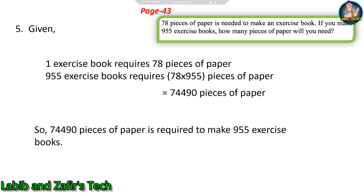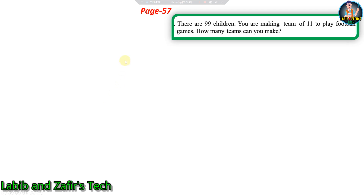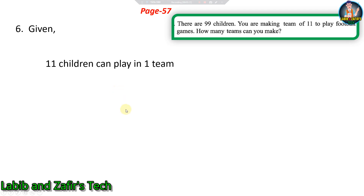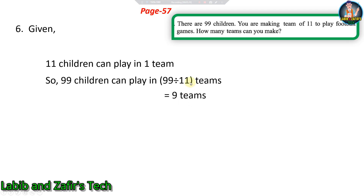Our sixth word problem, now going to page 57: there are 99 children, you are making teams of 11 to play football games, how many teams can you make? We were doing multiplication word problems, now we will do division. Given 11 children can play in one team, so 99 children can play in 99 divided by 11 teams, that is 9 teams.